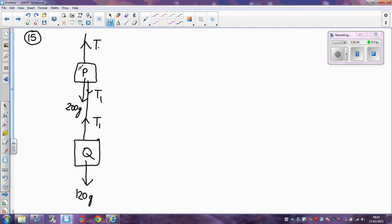Now, by far the easiest way to solve this question is to consider P and Q to be one big lump with a weight of 320g Newtons. The question then becomes much simpler.